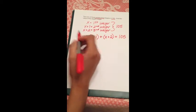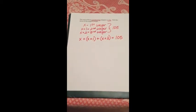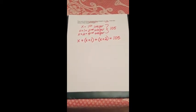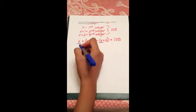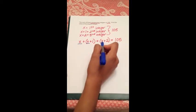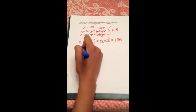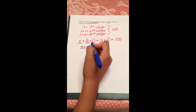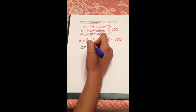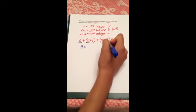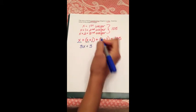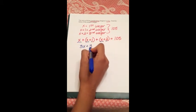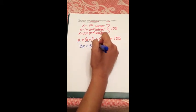Next, we have to combine our like terms. We're going to add together x, x, and x—we have 1, 2, 3 x's, which gives us 3x. And then we have the digits: 1 plus 2 gives us 3. So now we have the equation 3x plus 3 equals 105.